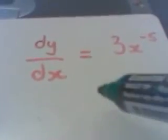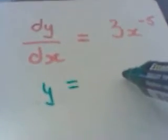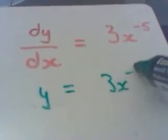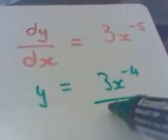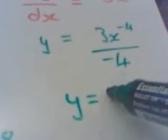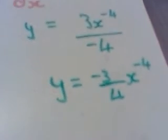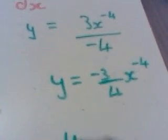And the next one: working backwards, add 1 to the power so that's 3x to the minus 4 and then divide by the negative 4, which I might tidy up a little bit to minus 3 quarters x to the negative 4. Again I might tidy up a little bit further: minus 3 over 4x to the 4.